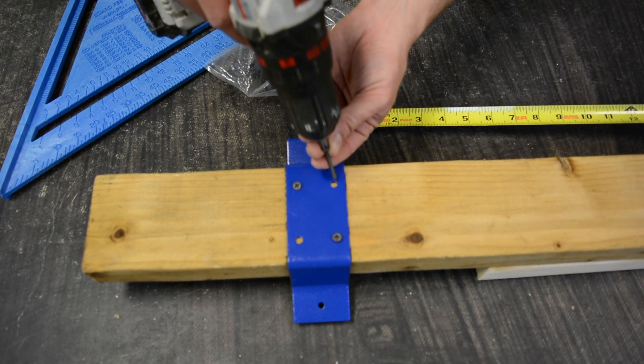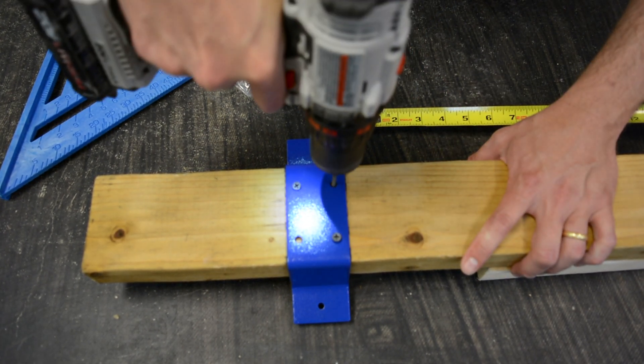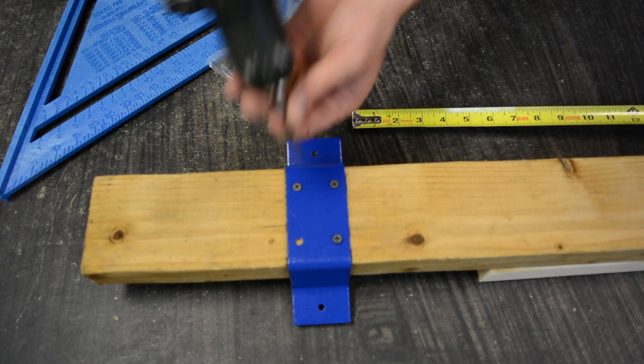When you're attaching your stud mounts, you want to make sure that they stay exactly on that line and are also perpendicular with the beam. It's very important that each mount is perpendicular with the beam because if it's not, then your M2 will not cut properly.